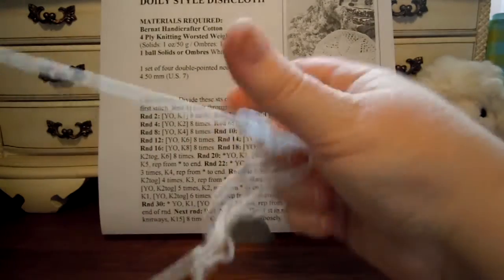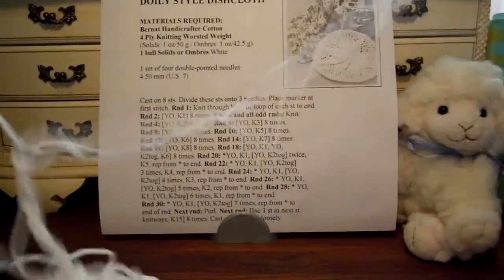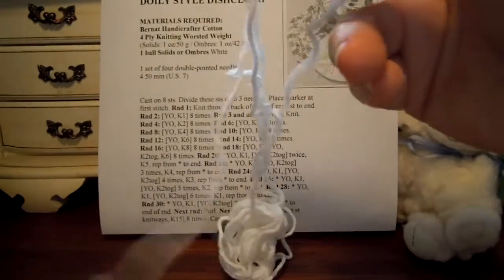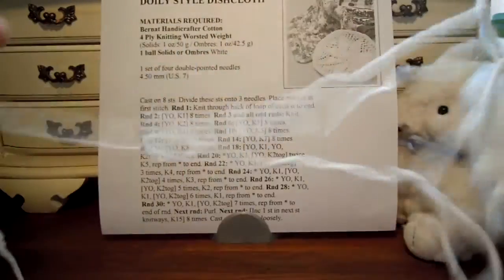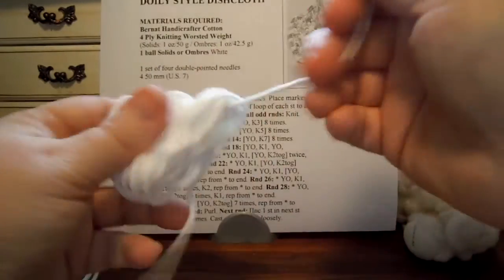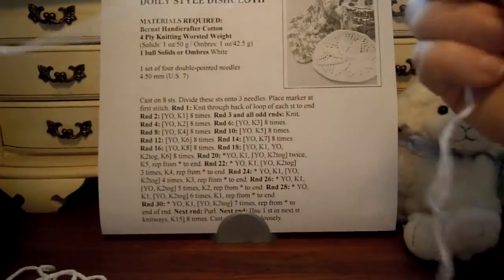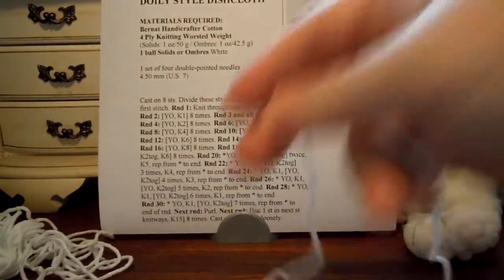Hello again. We're ready to get going with our dishcloth and I'm just finding the beginning of my yarn here. There it is. Put that off to the side and start working from the center of the skein because I pulled all of that from the center.